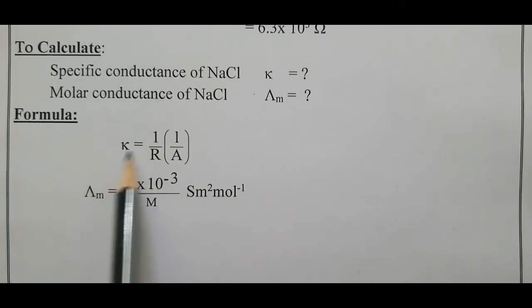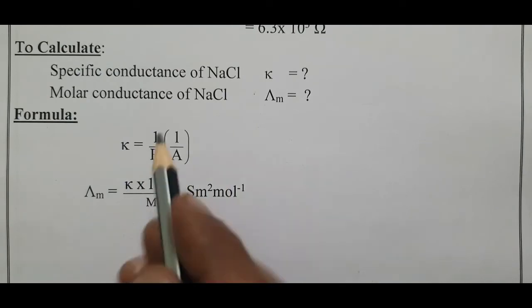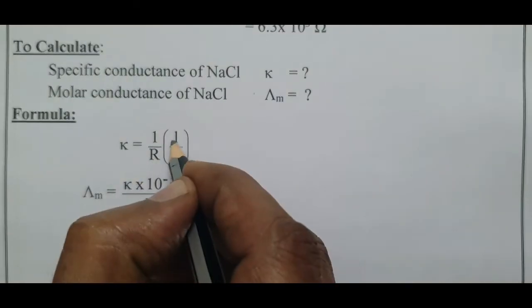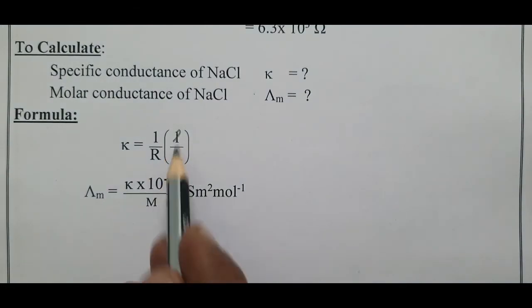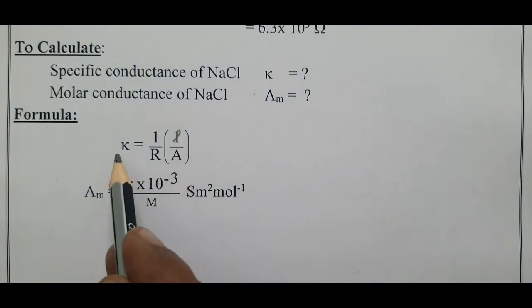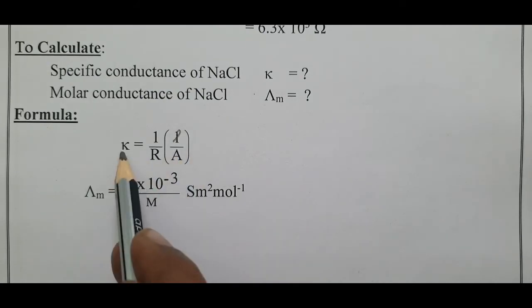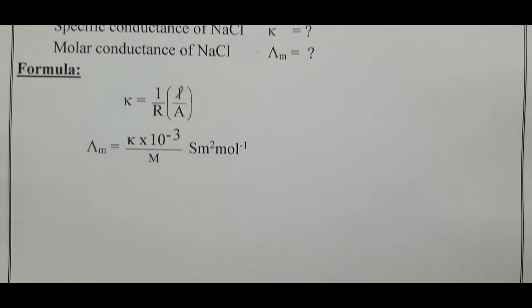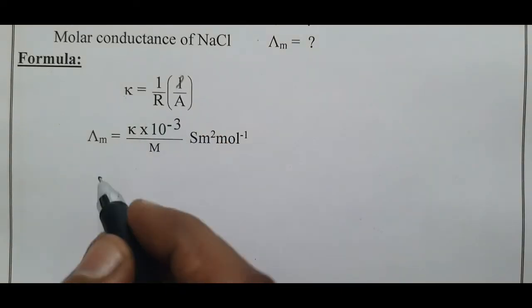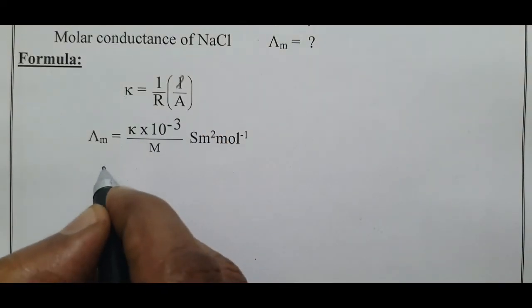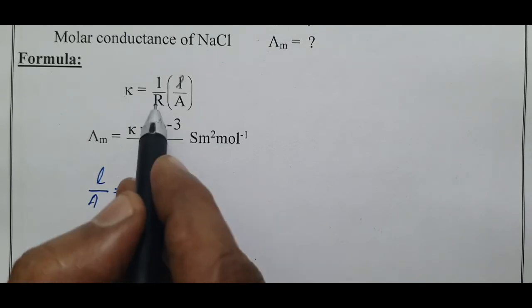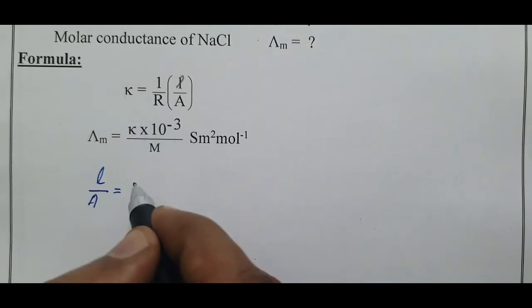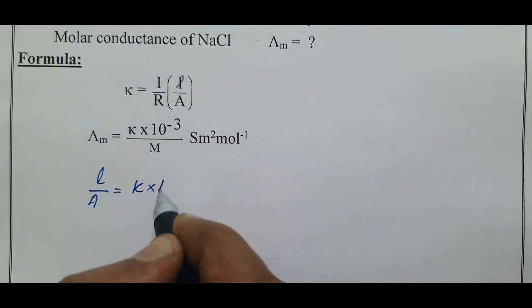The formula is κ = (1/R) × (L/A). The R value is given, but L/A (the cell constant) is not given directly. Therefore, we first calculate the cell constant using the known κ and R values for KCl. Rearranging: L/A = κ × R. Bringing resistance to the left-hand side gives L/A = κ × R.